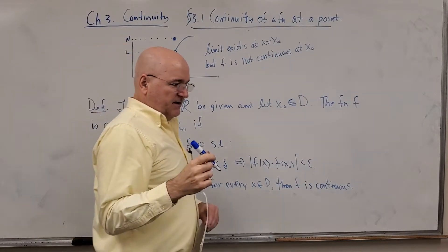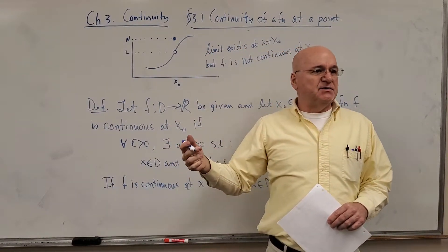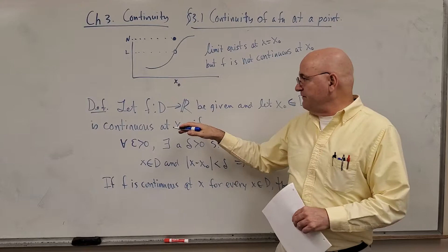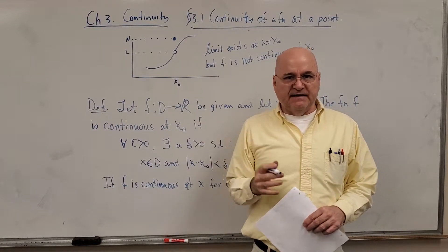So let's take a look at the definition of what it means for a limit to exist and then compare that to what it means for the function to be continuous at X naught versus what it means to have a limit at X naught.